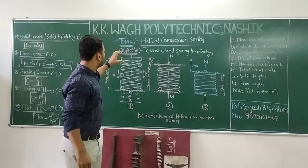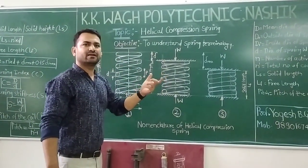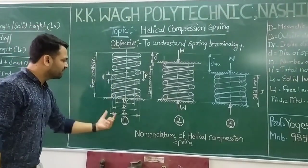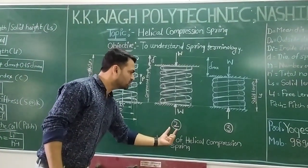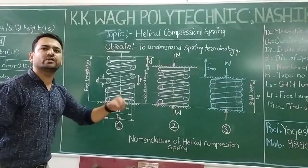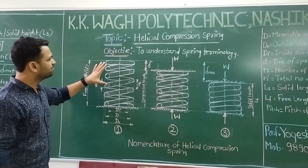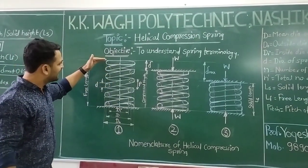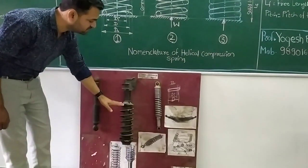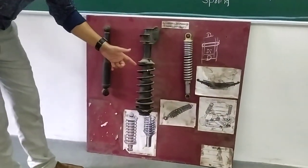The main aim of this lecture is to understand the terminology of the helical compression spring. Here is the helical compression spring's diagram. I have shown three diagrams — diagram number 1, diagram number 2, diagram number 3 — indicating the effect of loading on the spring. This actual spring shown here is used along with the shock absorber.